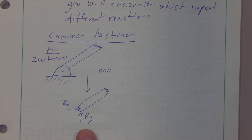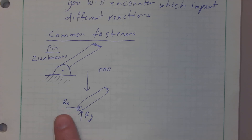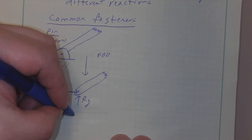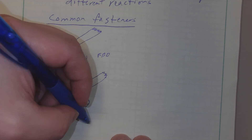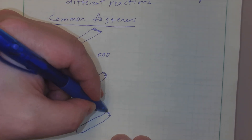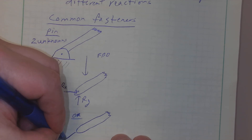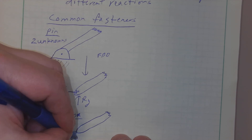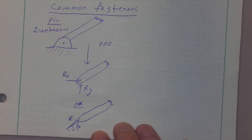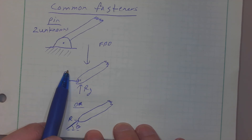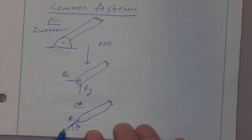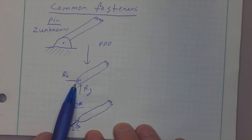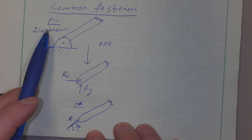A pin has two unknowns. Normally I draw it as Rx and Ry — unknown x component and unknown y component. You can also draw it as an unknown magnitude resultant at an unknown angle theta. In that case you still have two unknowns: either an unknown amount of force and direction, or an unknown x and y component. You can use trig to convert back and forth between the two.